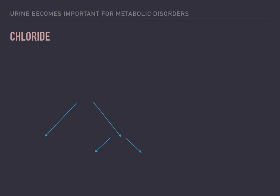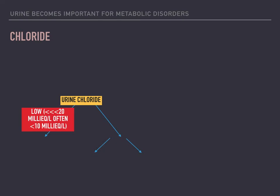Urine chloride becomes very important when we talk about explaining the causes of metabolic alkalosis. If the urine chloride is low — like less than 20 — the explanation of what is causing it could be diuretic use, vomiting, diarrhea, or cystic fibrosis.